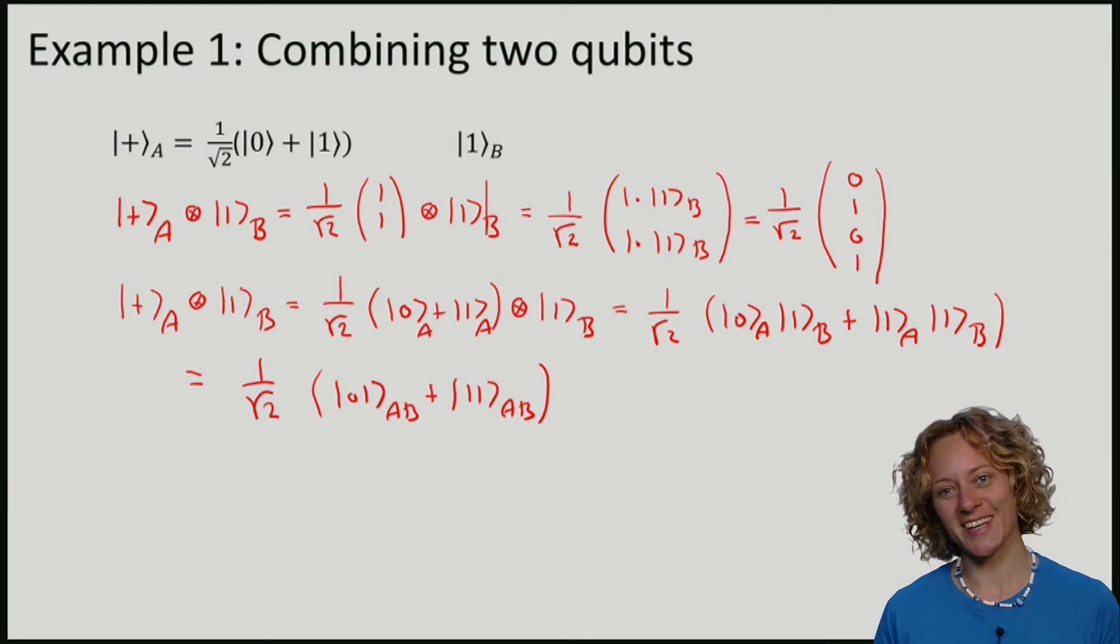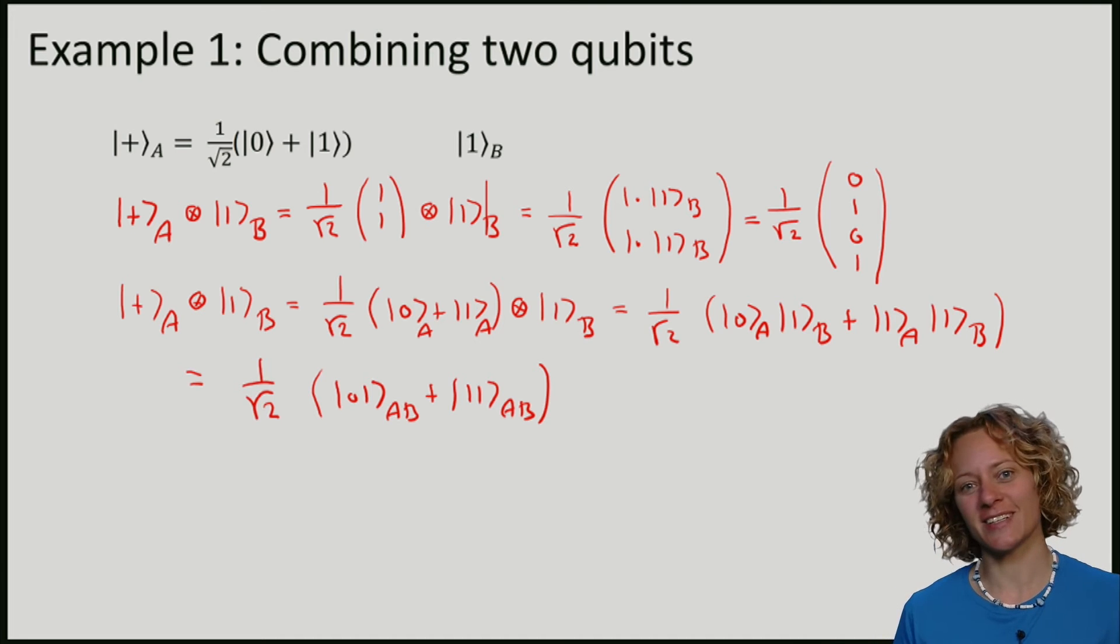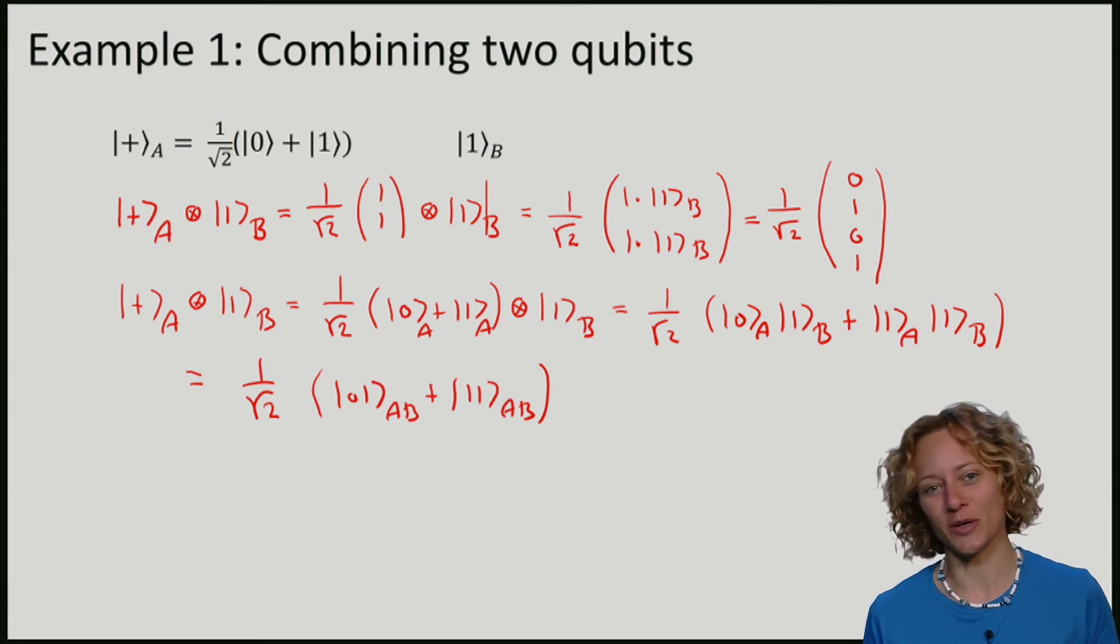You've seen this state before, namely we viewed it as an example of a two-qubit state. You can now see that we can obtain it by taking the tensor product between |+⟩ on A and |1⟩ on B.